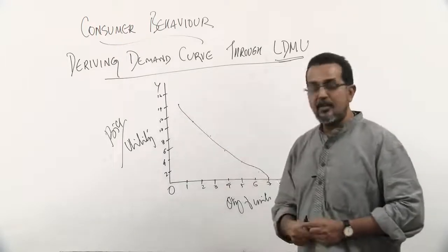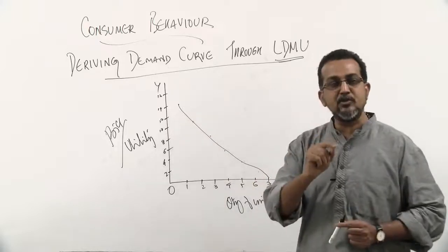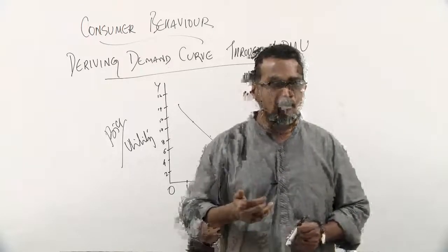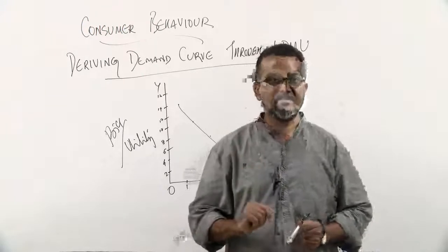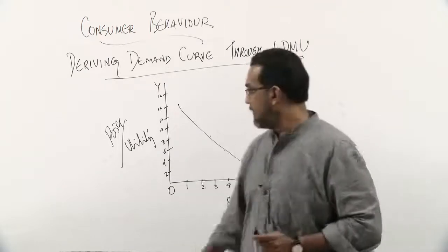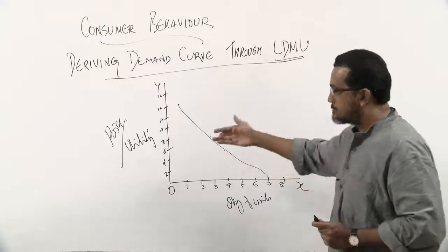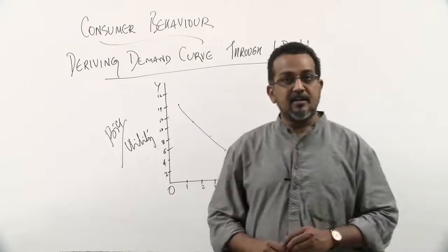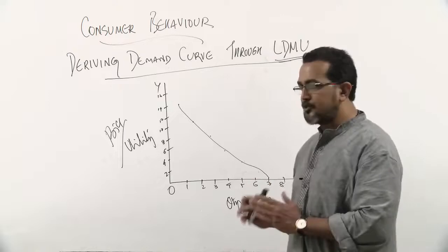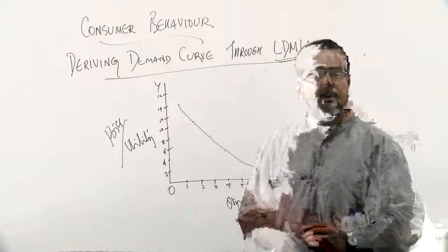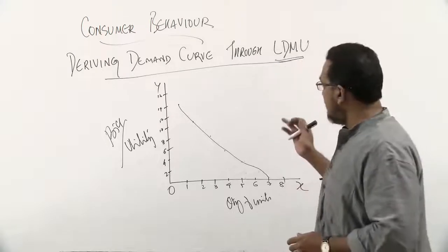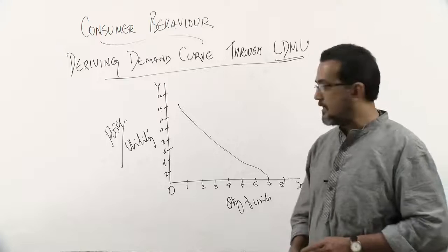As the price declines, the consumer buys more, because the larger the consumption, the lesser the utility. When utility is declining, the consumer is unwilling to pay a higher price and therefore buys a larger quantity only if the price also falls. This is why demand increases when price falls — because when consumption increases, utility declines, and the consumer is not willing to pay a higher price. Thus the law of diminishing marginal utility explains the derivation of the demand curve. In this session we discussed the concept of utility, types of utility, ordinal and cardinal approaches, and the law of diminishing marginal utility.